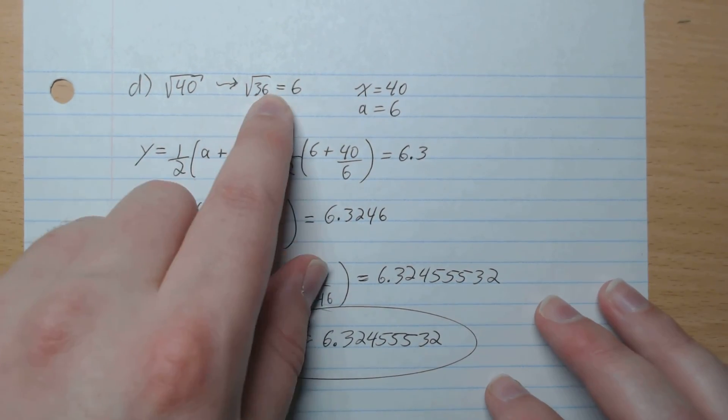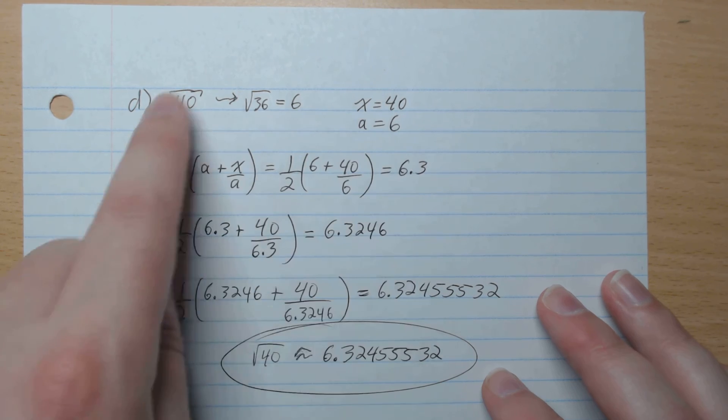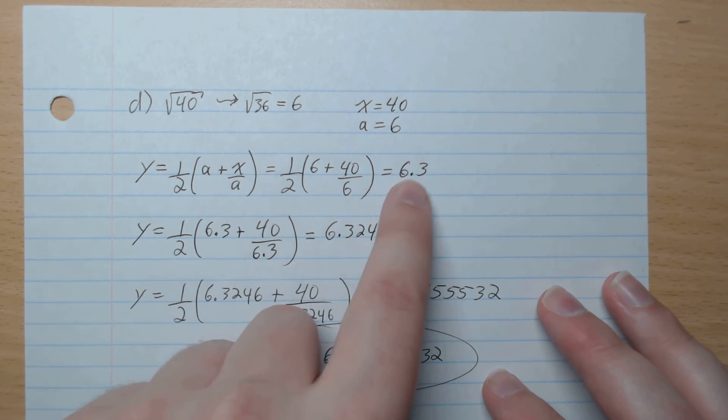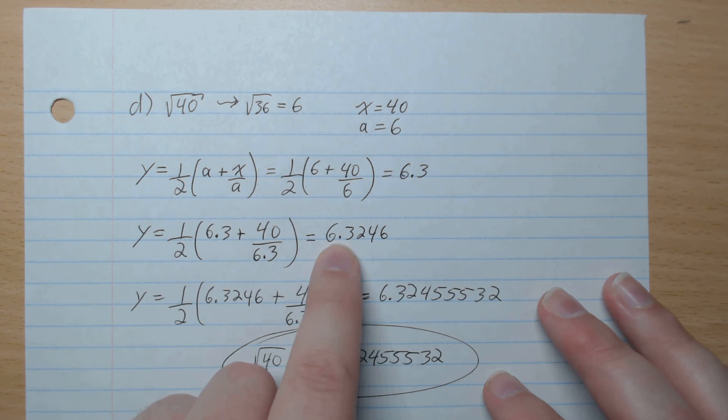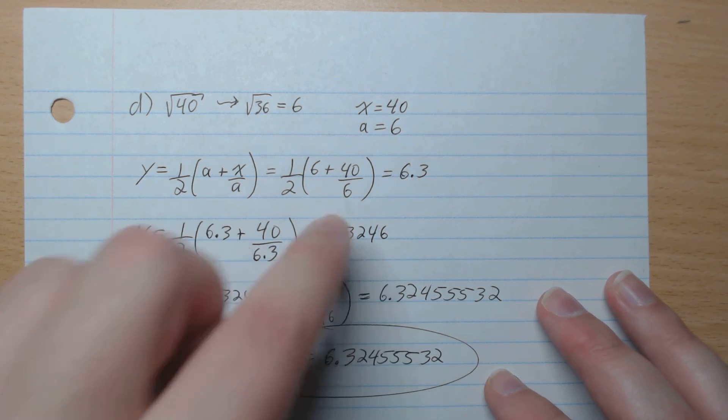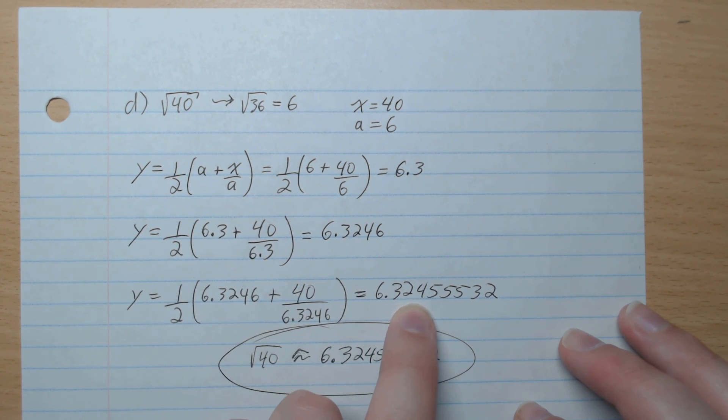D. Root 40. Closest is root 36. So a is 6, x is 40. Plug that in, we get 6.3. Plug in 6.3, we get 6.3246. Plug that in, and we get 6.32455532.